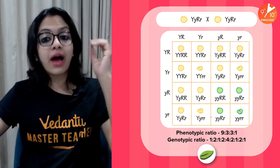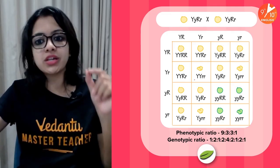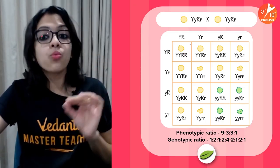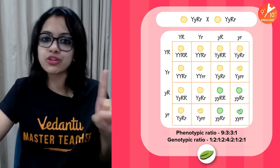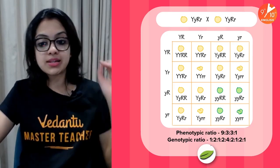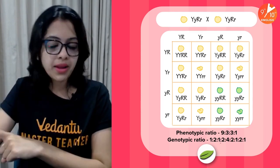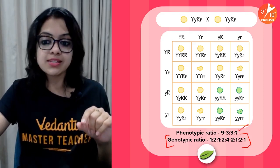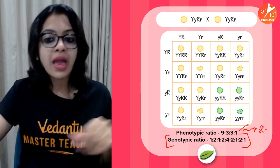The phenotypic ratio in the dihybrid cross is 9:3:3:1. My sincere suggestion is not to memorize this without meaning, but to work it out and be convinced what the 9, the first 3, the second 3, and the 1 each represent, so you will never forget it. As far as exams are concerned, the genotypic ratio is very complex — 1:2:1:2:4:2:1:2:1 — but normally it is not asked. The phenotypic ratio of 9:3:3:1 is what is most important for you to know.